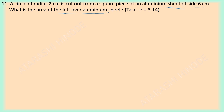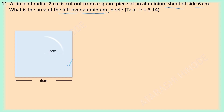Let us visualize this. Suppose this is the aluminium sheet — its side is 6 cm — and this is the circle of radius 2 cm which we have to cut out from this square. Now let us check what shape we are going to get when we remove this circle from this square.